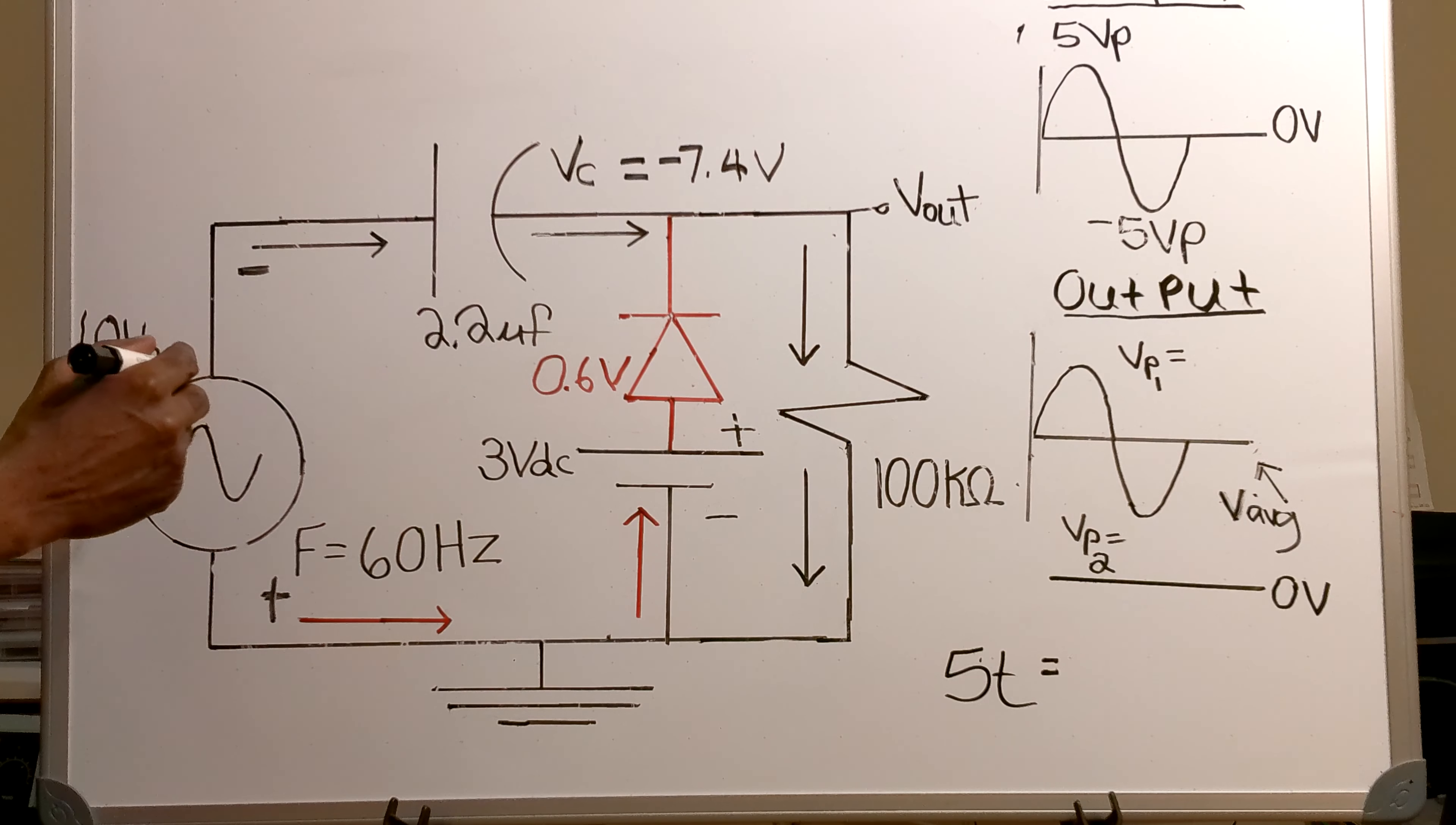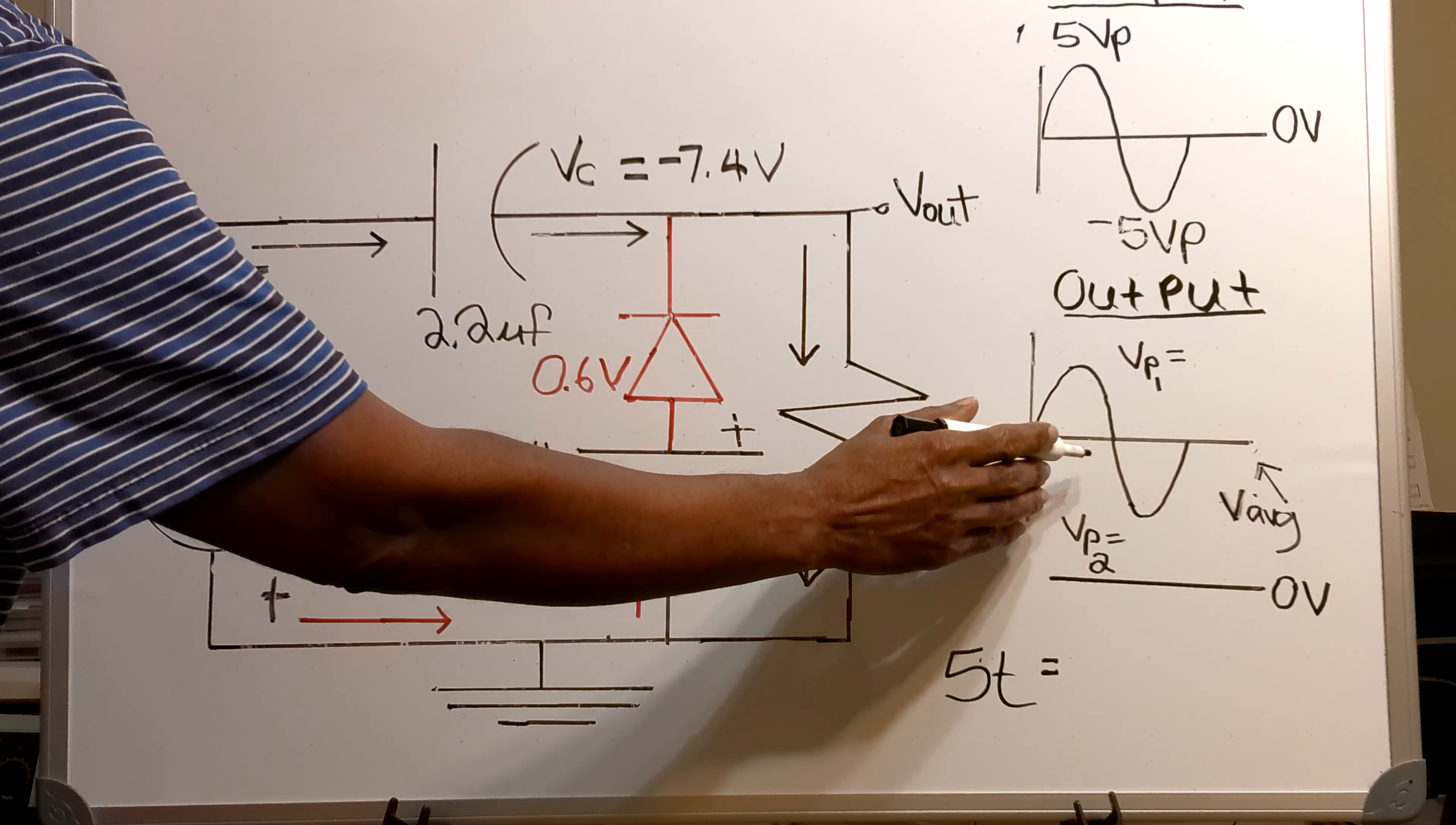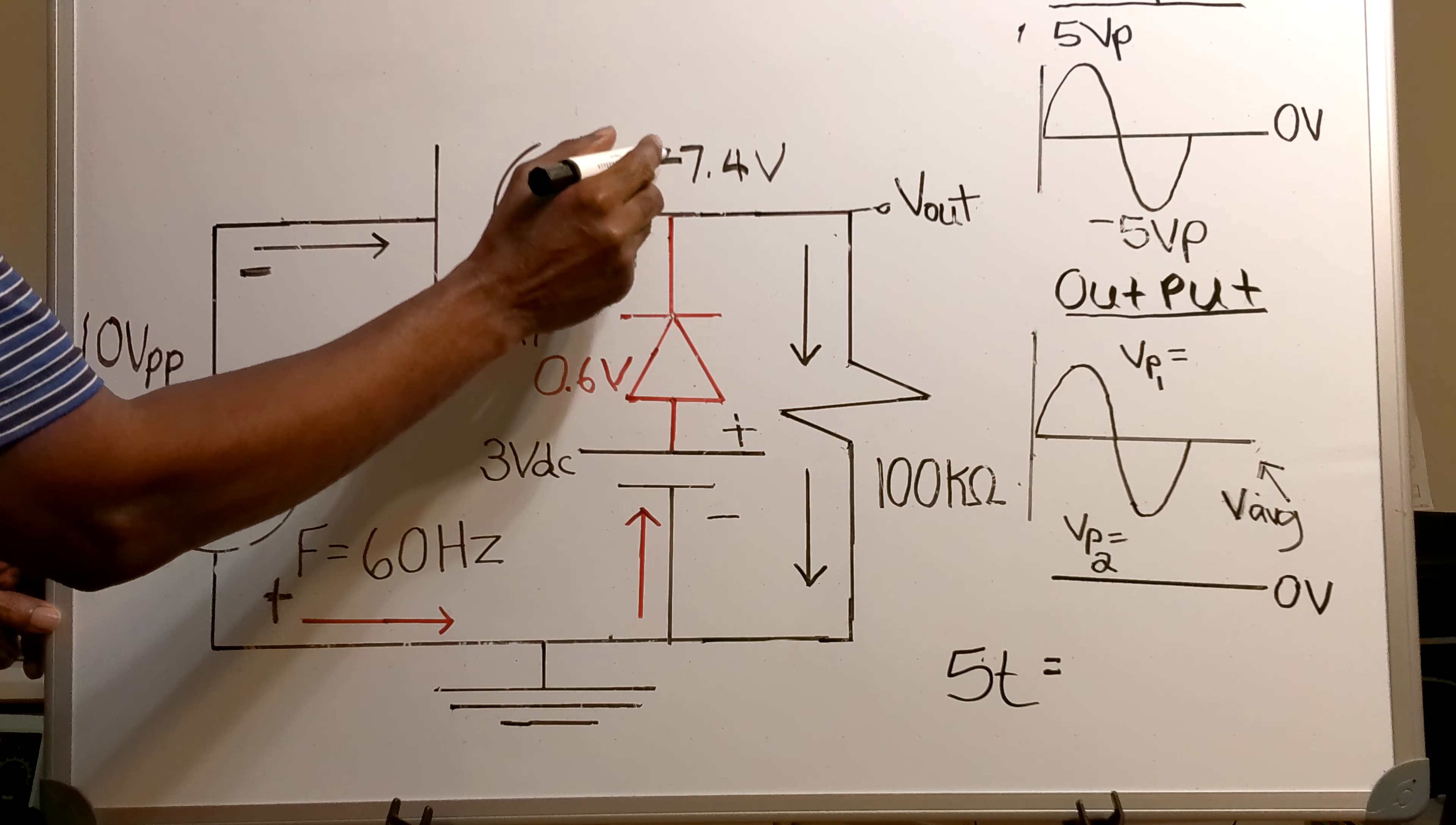Now what's happening here is that the polarity will now shift. This will become positive and this side will become negative. That back and forth between the polarities will continue to happen until we reach what's called a steady state.